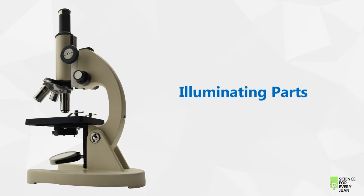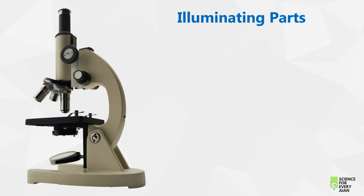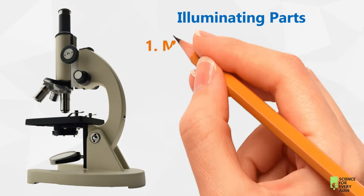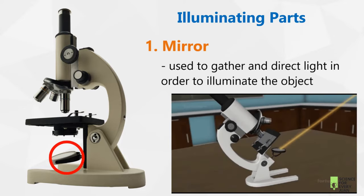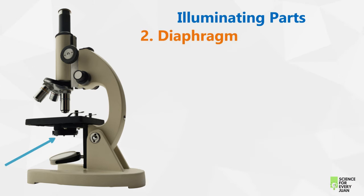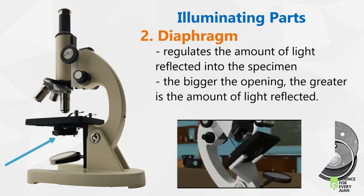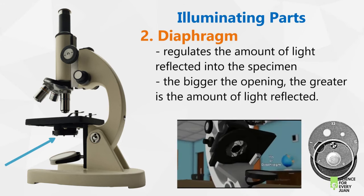Now let's move to the illuminating parts of the microscope. The first one is the mirror, which is used to gather and direct light in order to illuminate the object. One should be careful with this one because direct sunlight can also harm the eyes. Another illuminating part is the diaphragm, which regulates the amount of light reflected into the specimen — the bigger the opening, the greater the amount of light reflected.